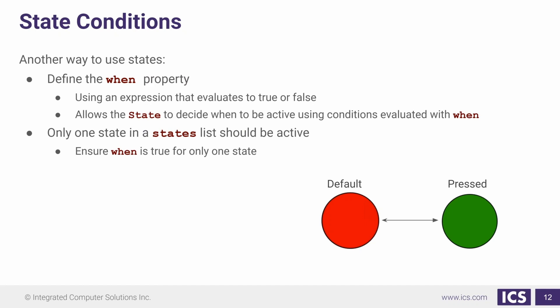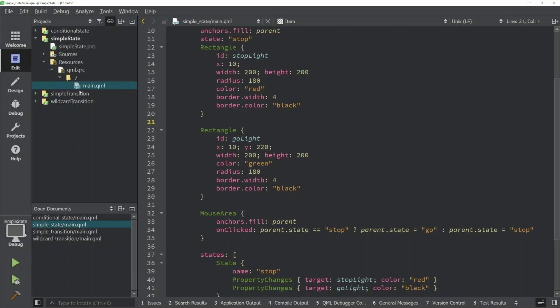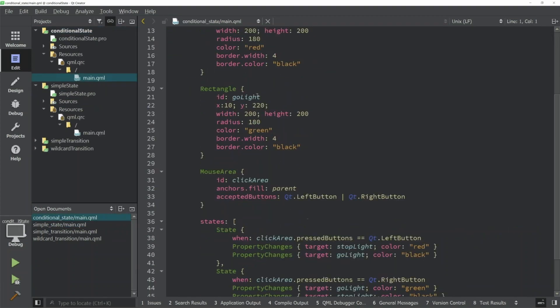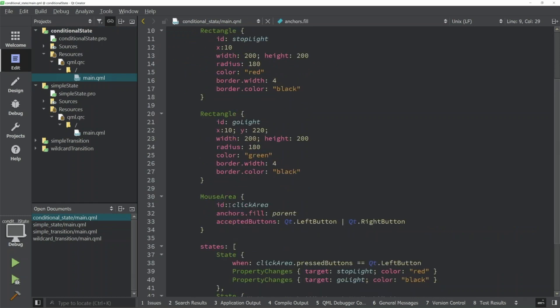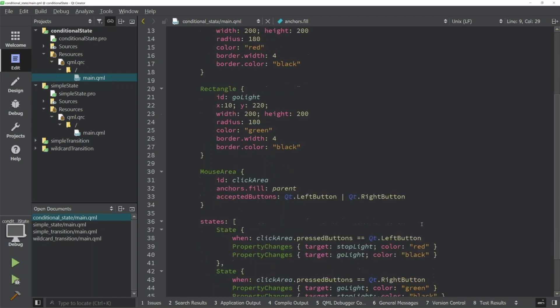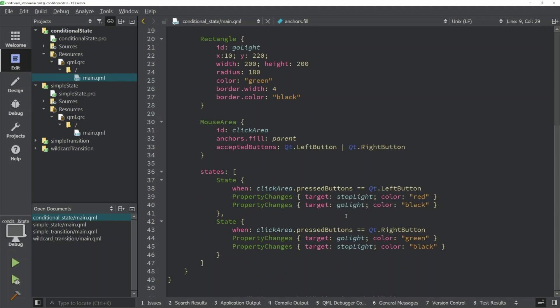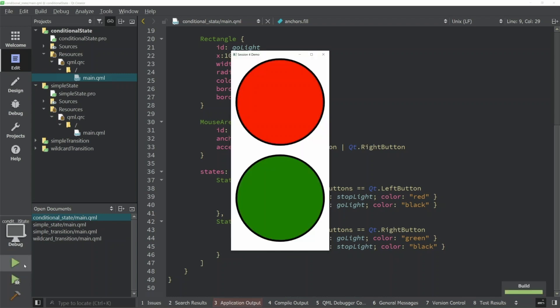Let's look at an example for how this type works. Here we have our conditional state. What I've done here is we are not entering a state on our item. Our mouse area is given now an ID and we're accepting button presses here. So when we have the left button pressed, we're going to be in what was our stop state. And when I press the right button on my mouse, we're going to be in what used to be the go state.